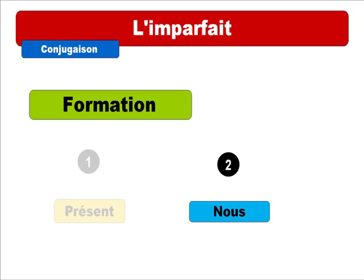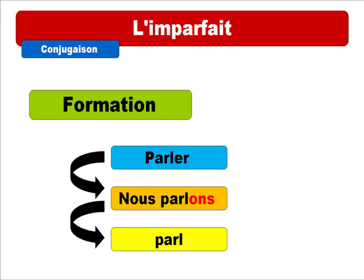So we've got a regular verb: parler, which means 'to speak' or 'to talk.' At the present form, you have 'nous parlons.' The idea is to take away the ending -ONS — shown in red on this slide. If you take that away, you get PARL — P-A-R-L — which is the stem we'll use to build the imparfait.